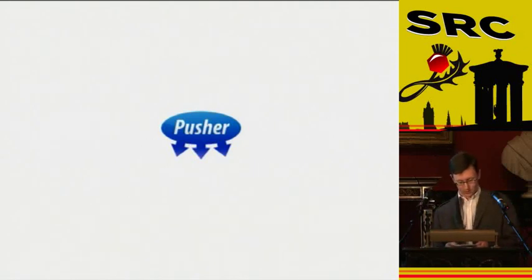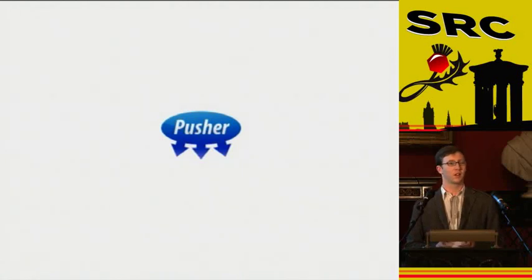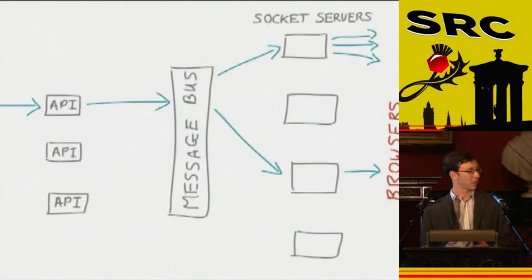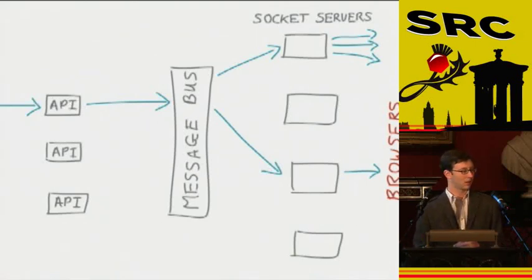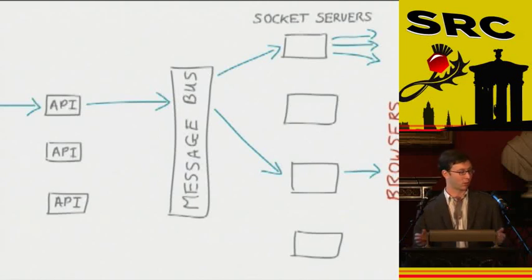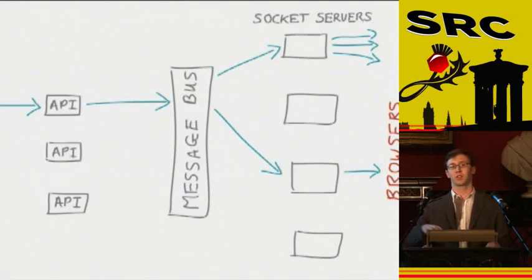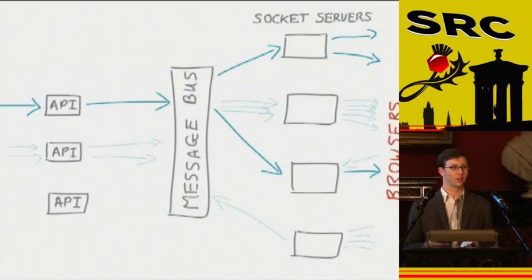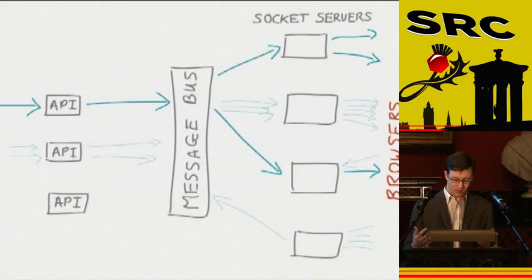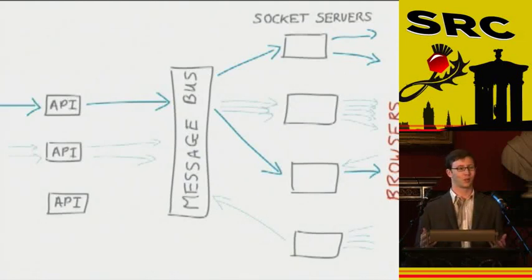This is about Pusher. At its very core, the idea of Pusher is to make it super easy to send messages from your server to web browsers. We've got two components: on the left side we've got the API — it's a little Sinatra app. You send messages to it via a REST API, they get sent to a message bus in the middle, and then those messages get sent to socket servers. Those servers maintain persistent connections with large numbers of browsers. In the system, there are lots of operations happening all the time — hundreds of people connecting, disconnecting, and sending messages.